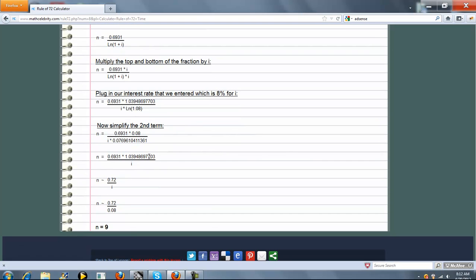When you're done evaluating it, this is approximately 0.72 over i. That's how they get the Rule of 72.